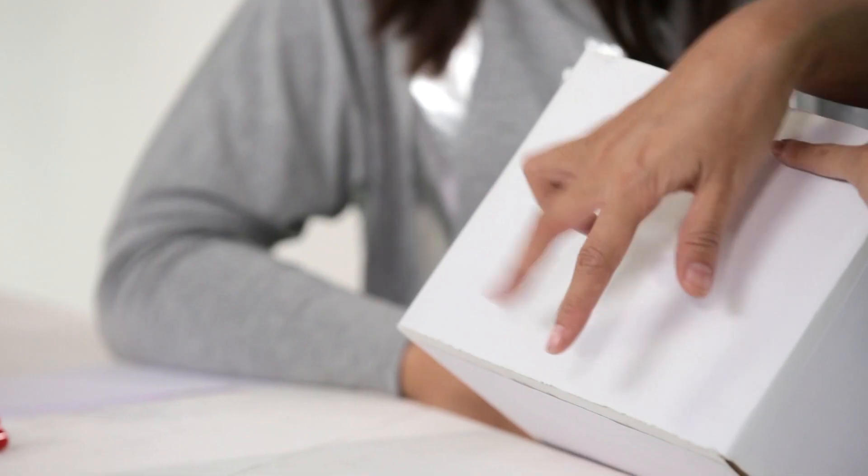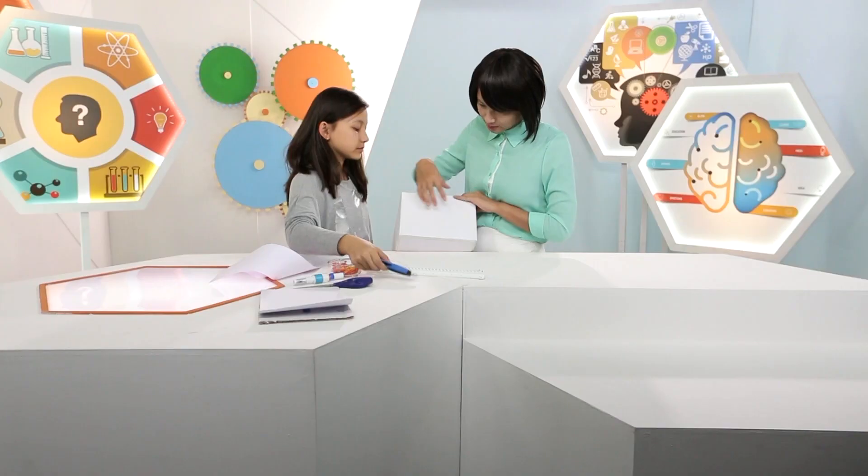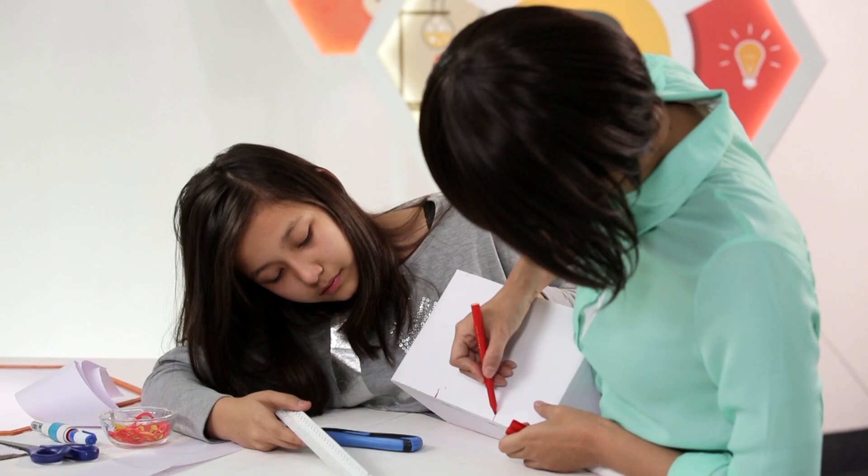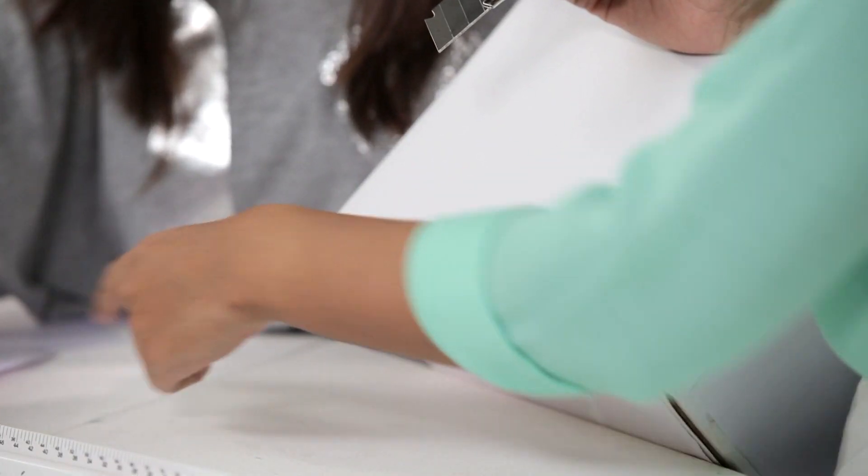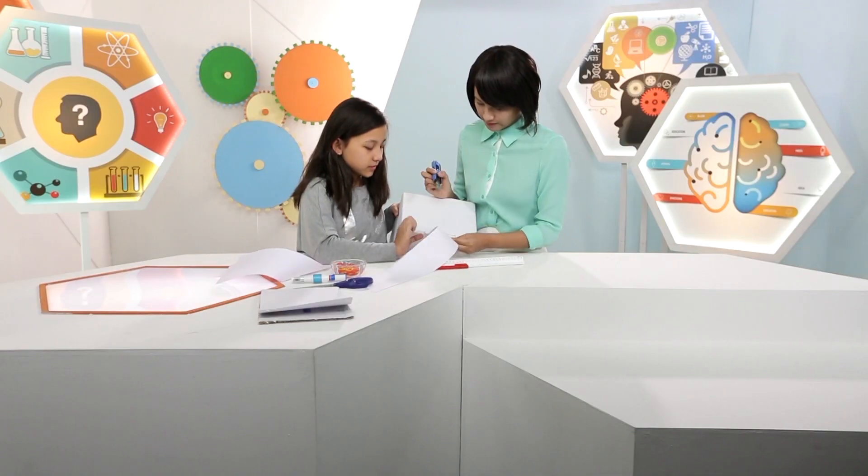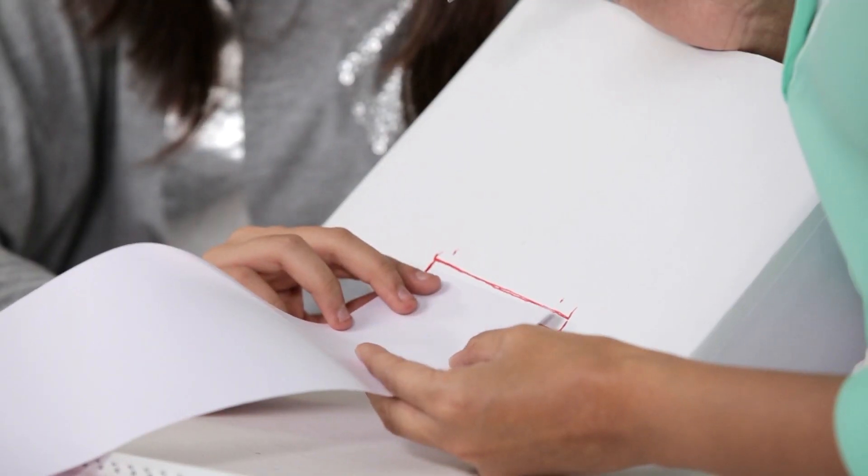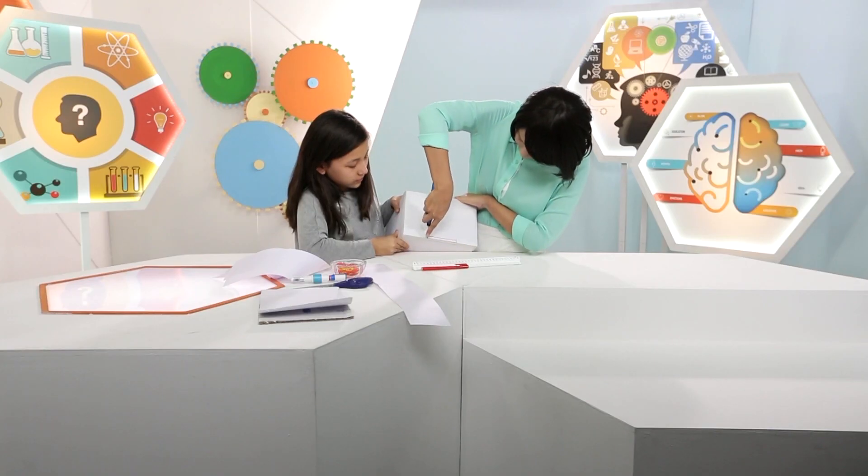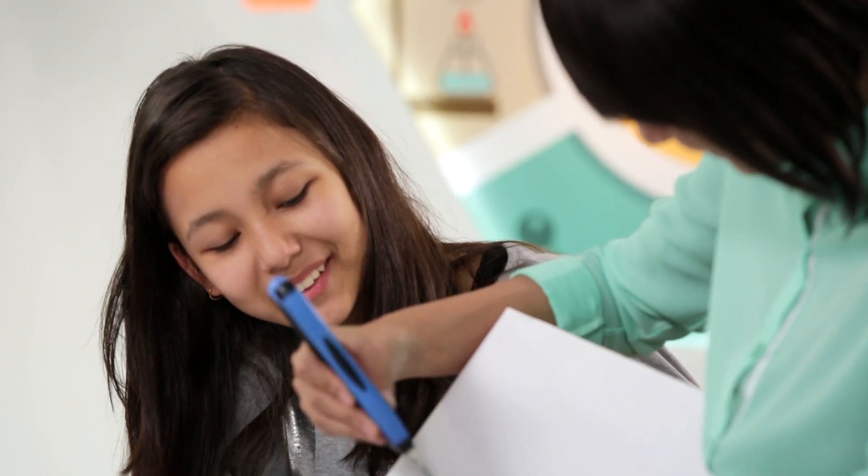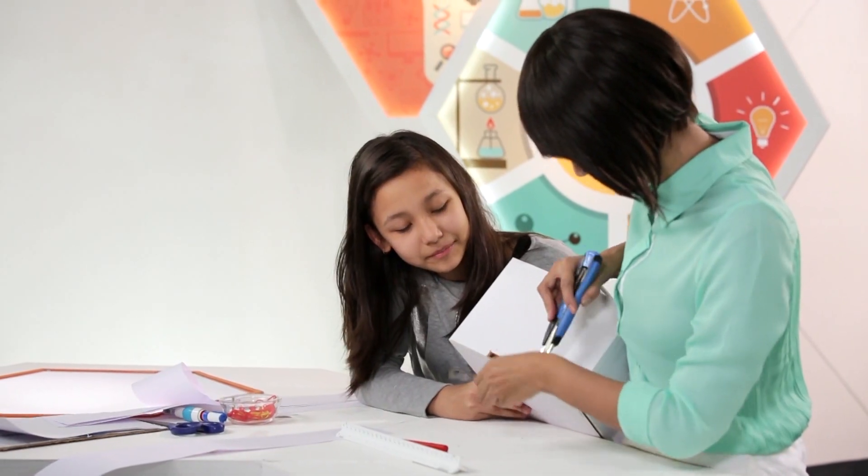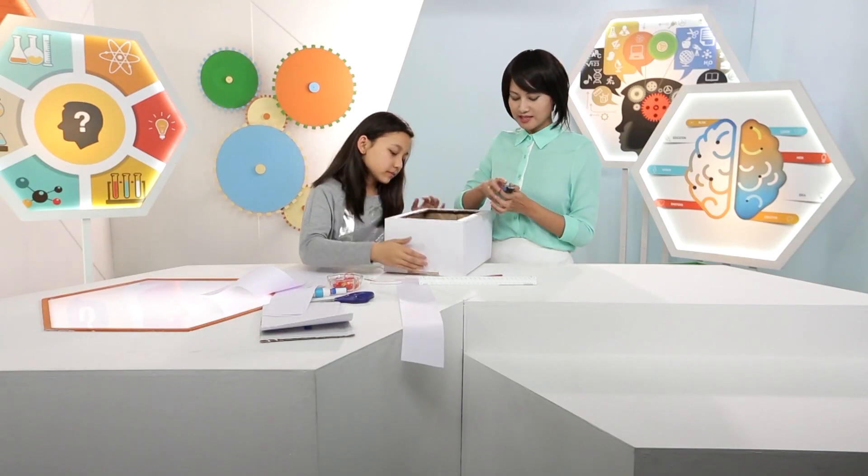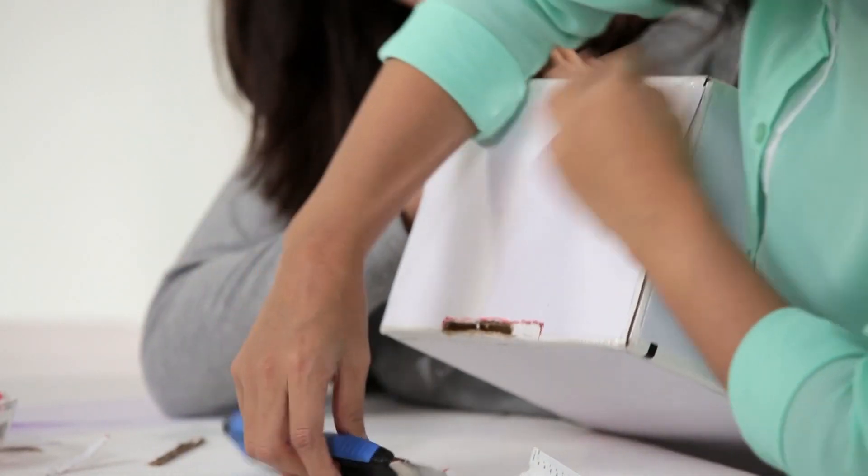...a slit right here in the middle portion of the bottom, so we'll just mark it up first. Remember that the width of the slit should be a little more than the paper, so yeah I think we're good to go. We'll do the same thing on the other side.